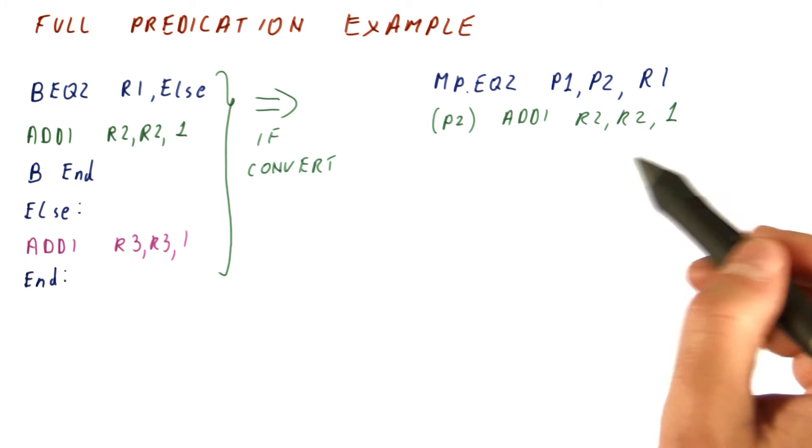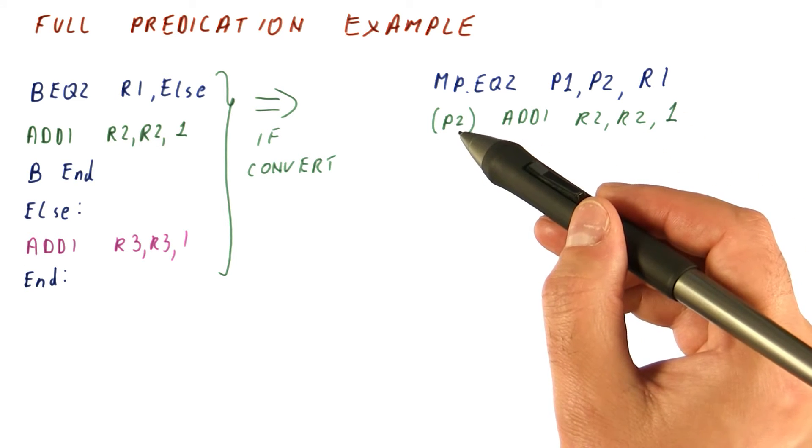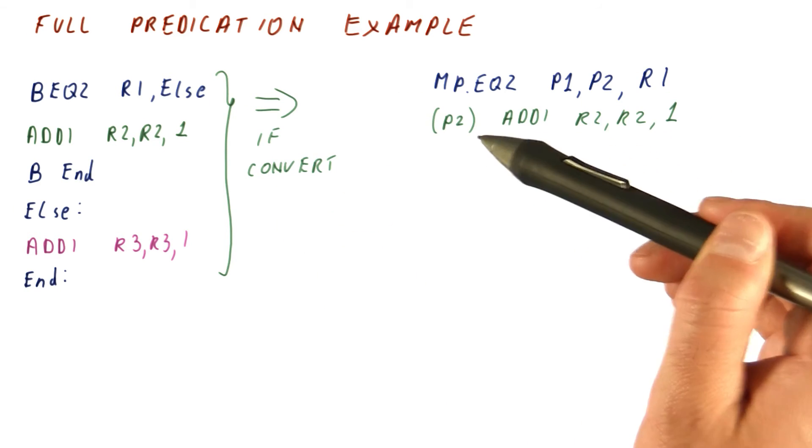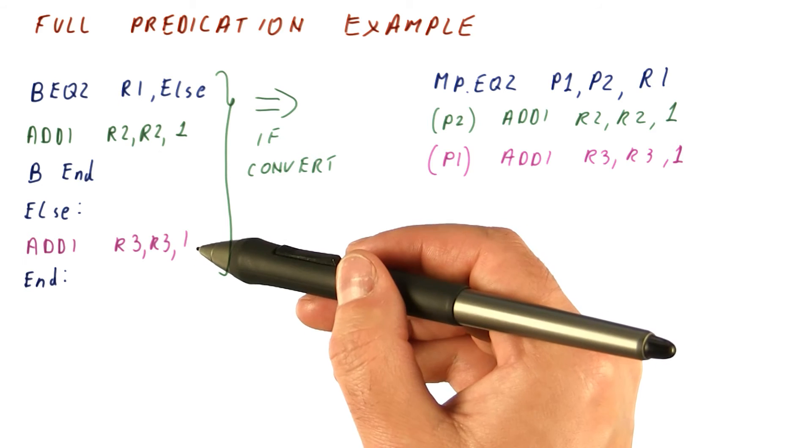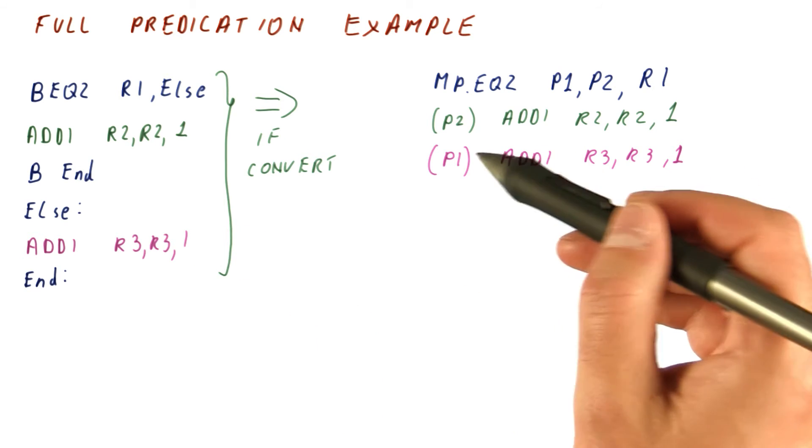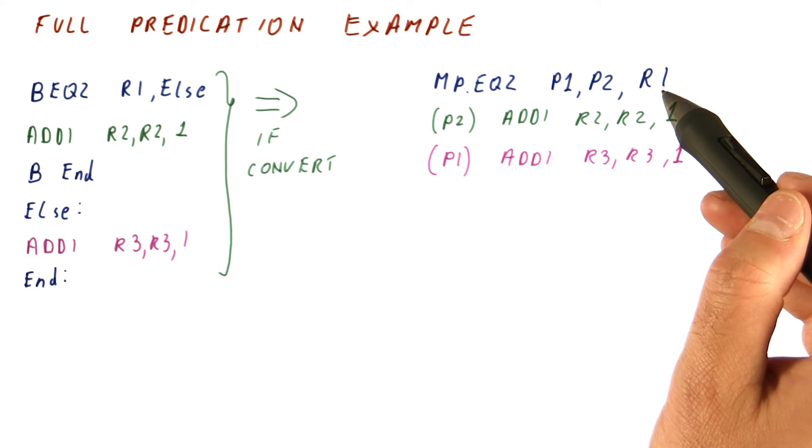Now we can simply do the add i of 1 plus R2 into R2. But we will predicate it with P2 so that it only gets done if R1 was not equal to 0. And then this instruction becomes exactly what it was here, except that now it's predicated so that it only gets done if R1 is equal to 0.